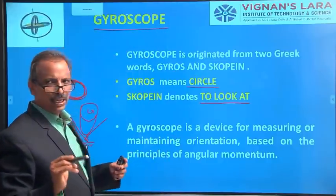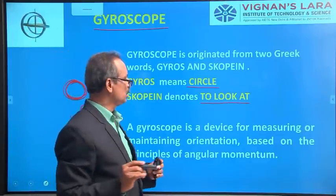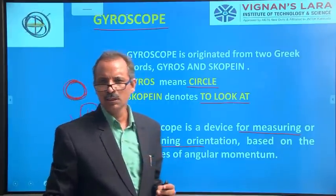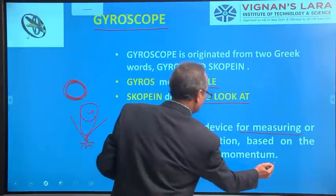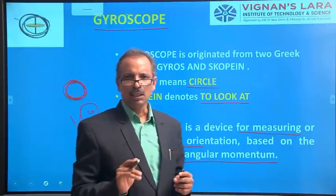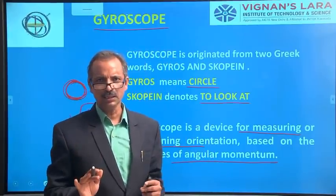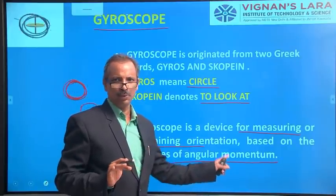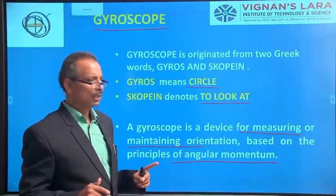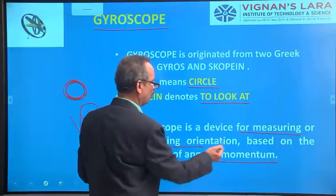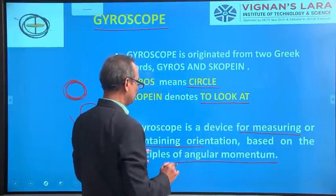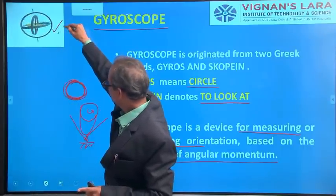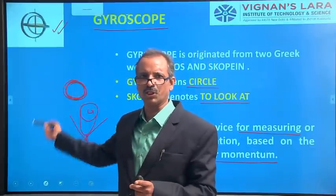A gyroscope is a simple device used for either measuring or maintaining orientation, based on the principle of angular momentum. In the next lecture, we will continue with the angular momentum principle and how it applies to gyroscope orientation measurement. You can see the animation here — it is actually a gyroscope, which we would like to discuss for another 5 to 6 lectures. Thank you.